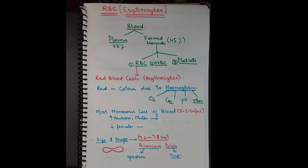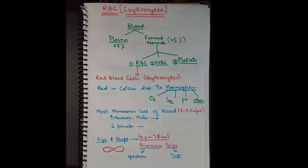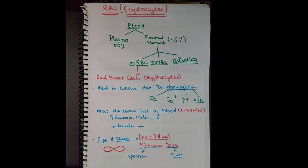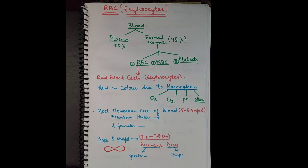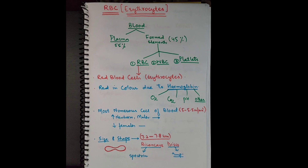In our previous video we discussed blood grouping and two important hemoglobin disorders: sickle cell anemia and thalassemia. In today's video we are going to discuss red blood cells and different parameters related to them.